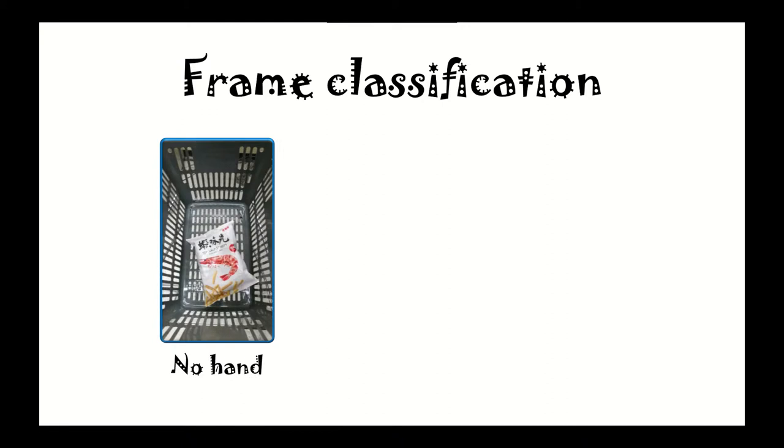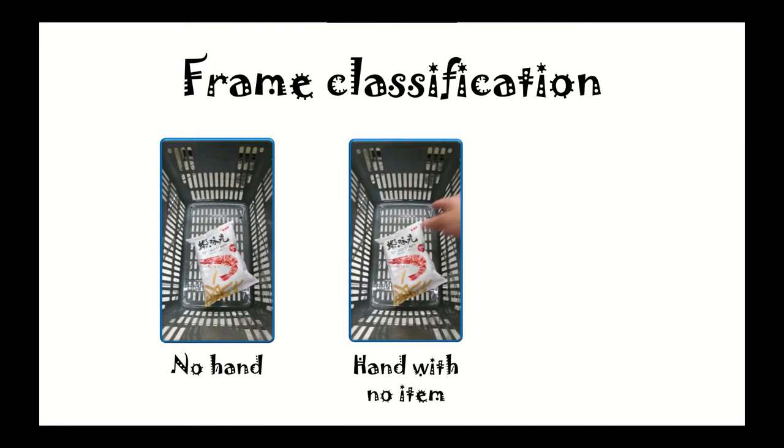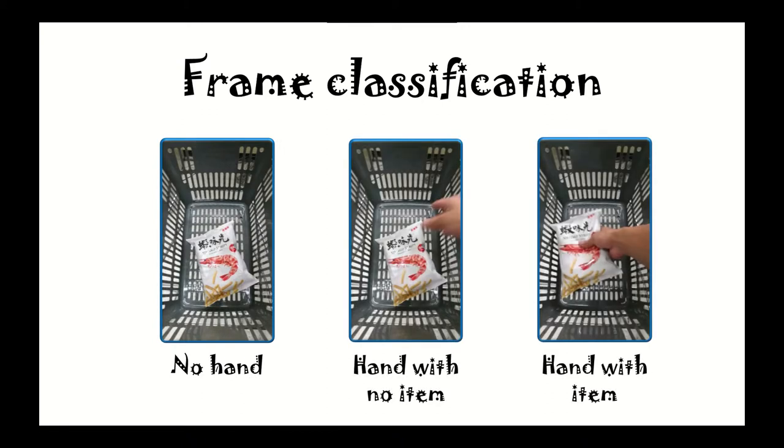The context of the image is mainly divided into three different classes: no hand images, empty hand images, and holding item images.